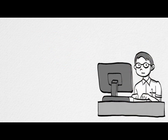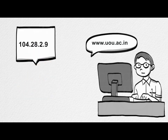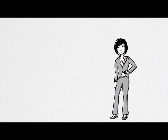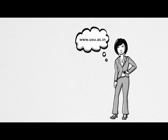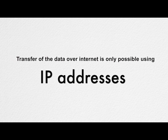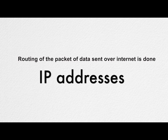Whenever we browse any website on the internet, we type a name like www.uou.ac.in. We rarely deal with IP addresses like 104.28.2.90, but even if we type an IP address in the URL, it will land us on the same webpage. We are much more comfortable using and remembering names instead of numbers. Moreover, these IP addresses change over time and some sites have multiple IP addresses. The transfer of data over the internet is only possible using IP addresses, because the routing of data packets is done using IP addresses.